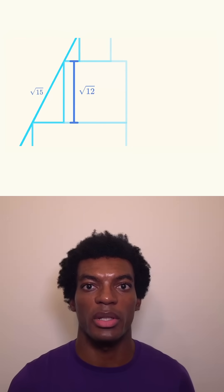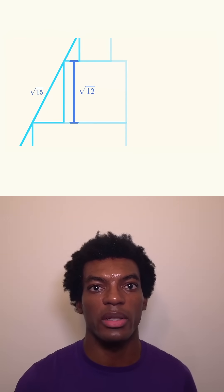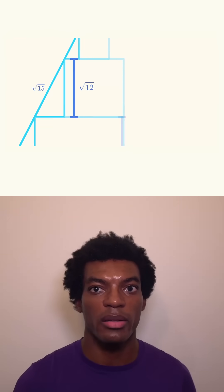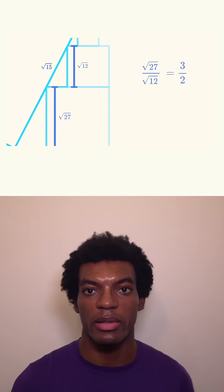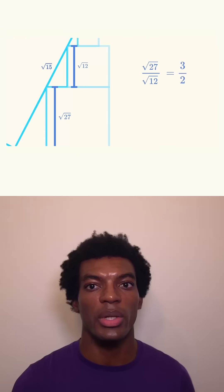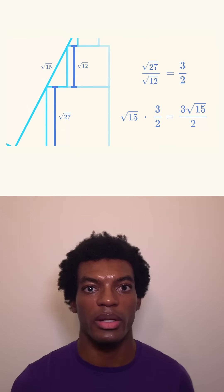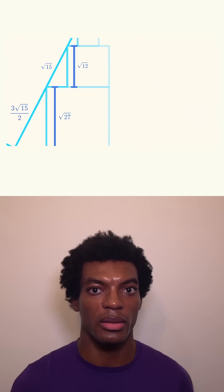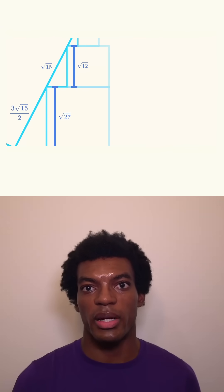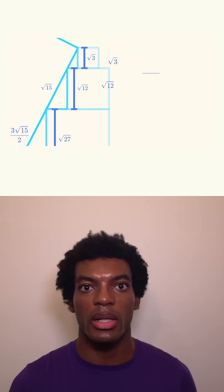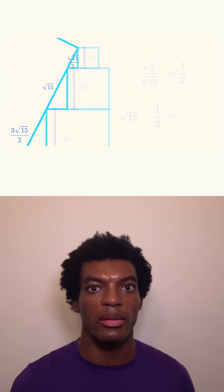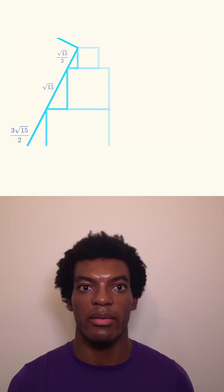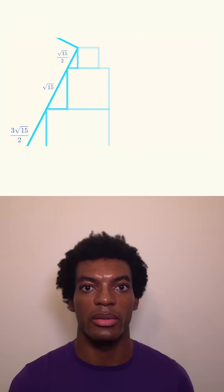Since the triangles are similar, the ratio is the same between each of their corresponding sides. The length of the right leg of the bottom triangle is the square root of 27, which is in a ratio of 3 to 2 with the right leg of the middle one. We can use this ratio to find the hypotenuse of the bottom triangle. We can use the same logic to find the hypotenuse of the top triangle. Its sides are in a ratio of 1 to 2 with those of the middle triangle, so the length of the top triangle's hypotenuse is half that of the hypotenuse of the middle triangle.